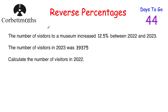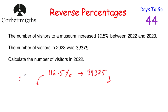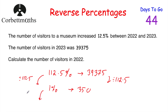Using the first approach: the number of visitors in 2023 was 39,375, after a 12.5% increase. If we started with 100% and it increased by 12.5%, that's 112.5% equals 39,375. Dividing both sides by 112.5: 39,375 divided by 112.5 equals 350, so 1% equals 350. Multiply by 100: 100% equals 350 times 100 equals 35,000. So the museum had 35,000 visitors in 2022.